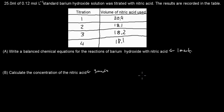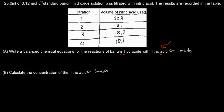Welcome back. For the first part, what we have to do is write the balanced equation for barium hydroxide reacting with nitric acid. Let's assume you know nitric acid's chemical formula, as it has come up in past chapters. The chemical formula for nitric acid is HNO₃.